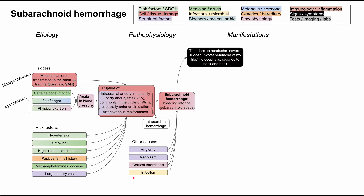Now let's talk about the manifestations of subarachnoid hemorrhage. The classic symptom is the thunderclap headache — a severe, sudden headache sometimes described as the worst headache of my life. It is holocephalic, meaning it affects the entire head all the way around, and it radiates to the neck and to the back.